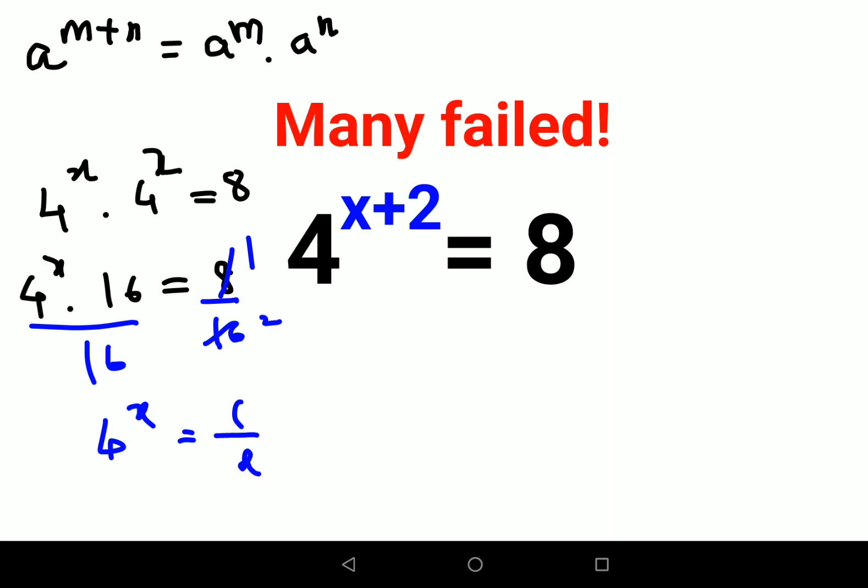So 4 raised to x equals to 1 upon 2. Remember 1 upon a raised to n can be written as a raised to minus n. So 1 upon 2 is basically 2 raised to minus 1, and 4 we can write as 2 square the whole raised to x.